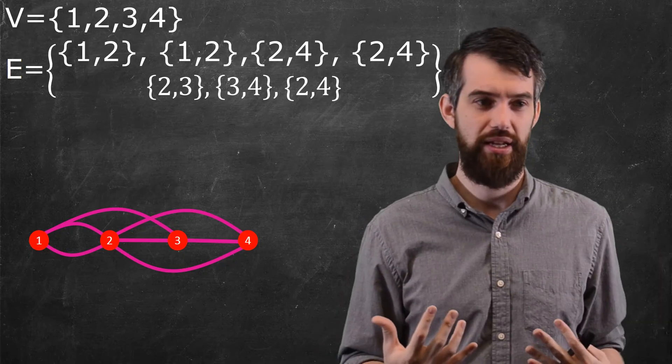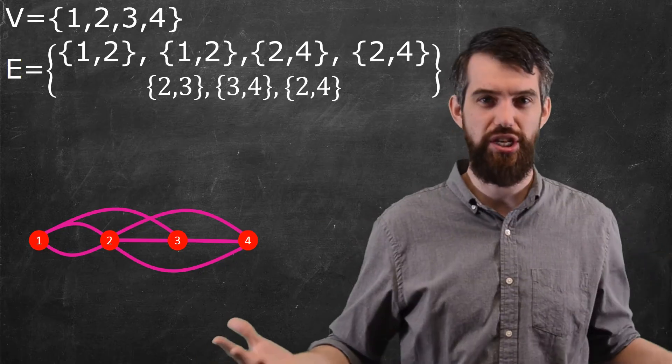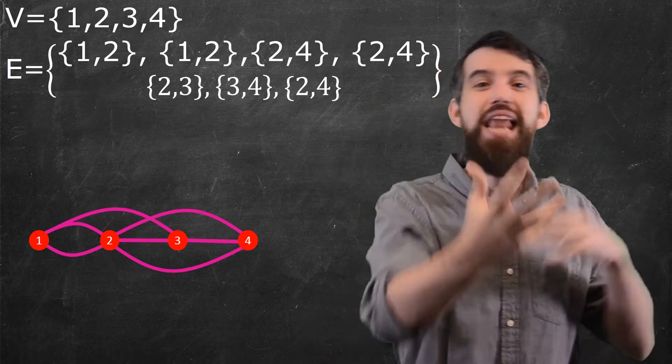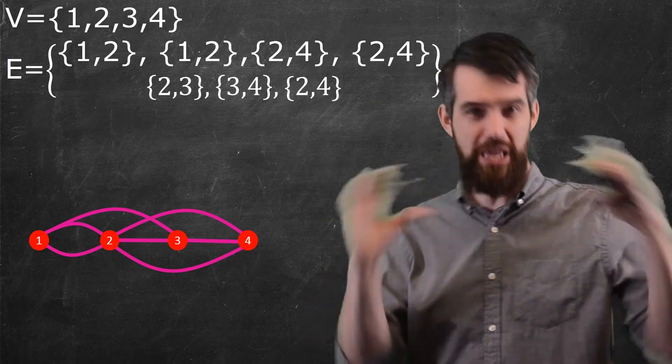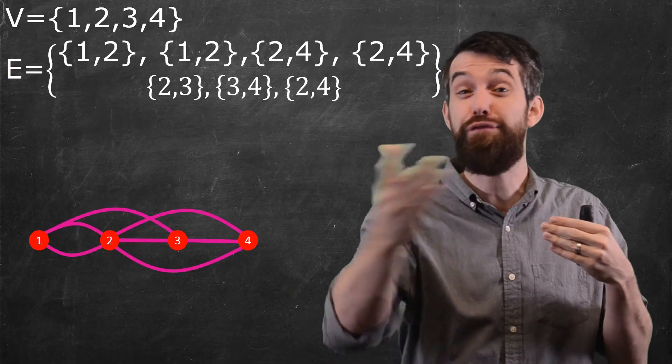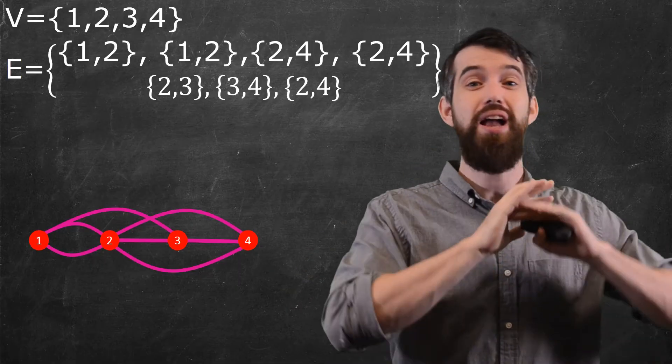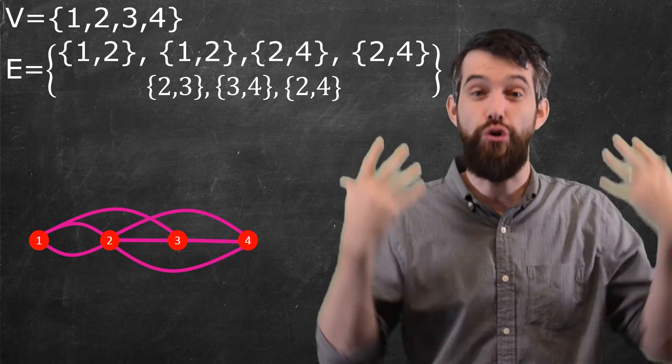So, the point is this. If you have many situations in real life where you've got sort of nodes and connections between them, another example, by the way, is Facebook, where you have a whole bunch of people who are vertices, and then if you're friends, you have a connection between them. In all sorts of different examples in the real world, you have graphs.